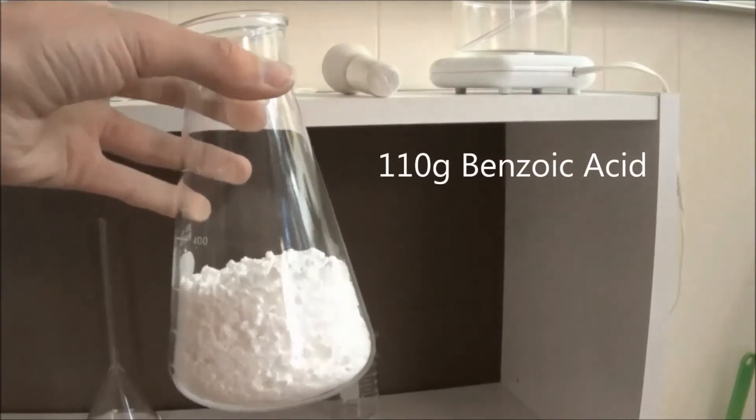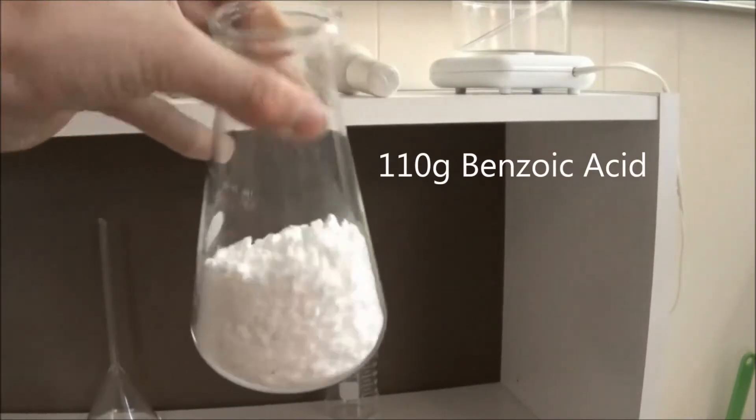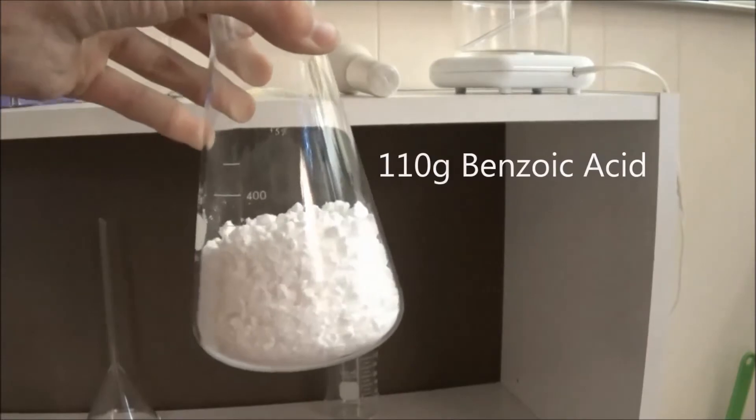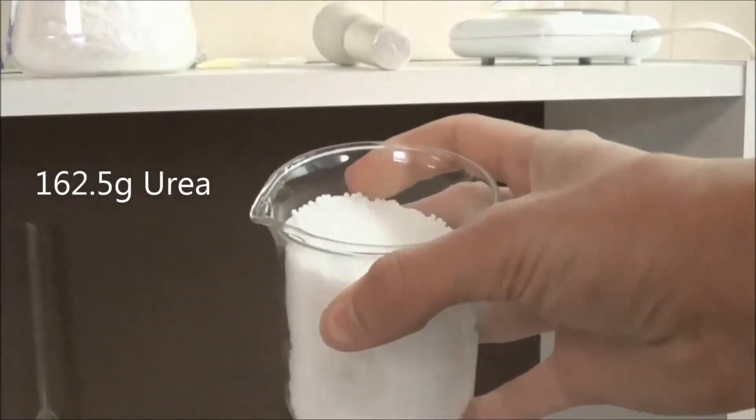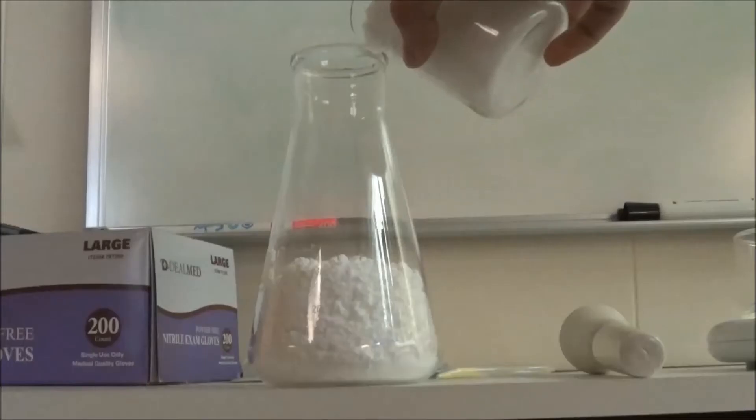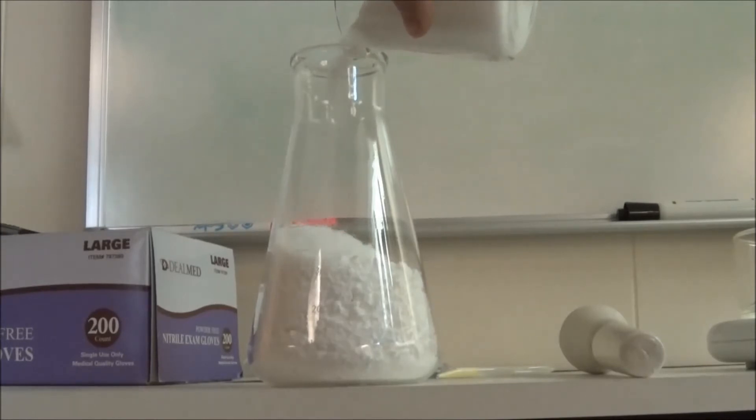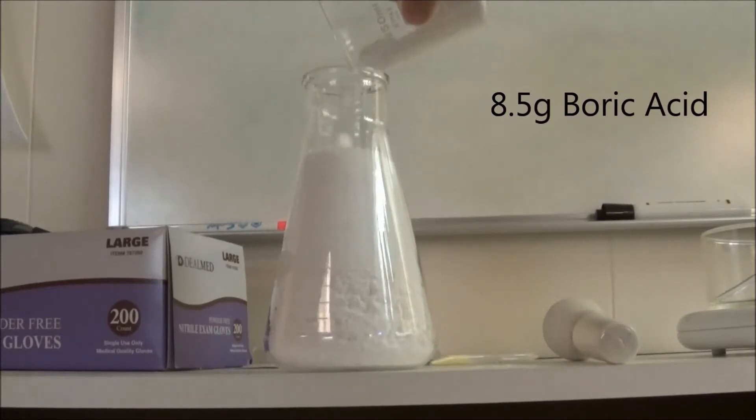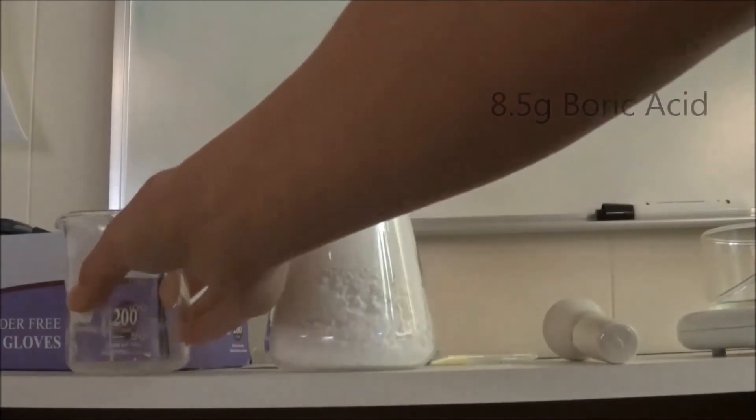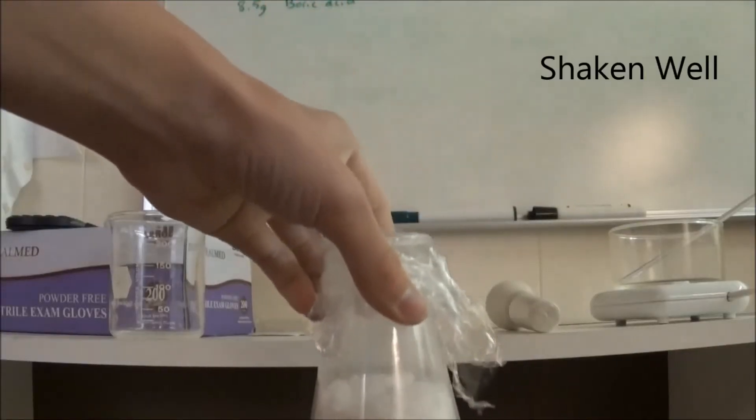I started off with 110 grams of benzoic acid. To this, I added 162.5 grams of urea. The final ingredient was 8.5 grams of boric acid. It was then shaken well to mix the reactants evenly.